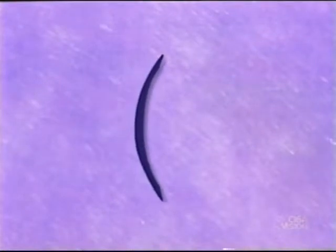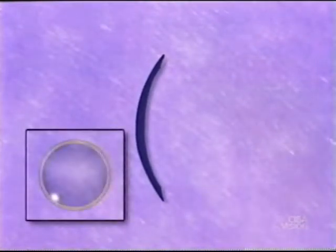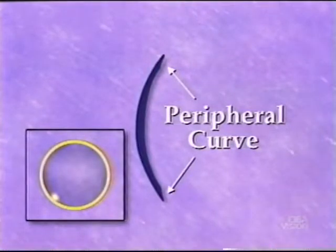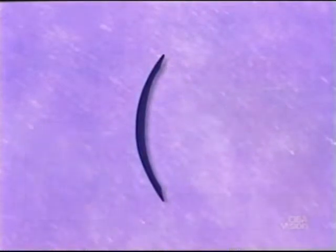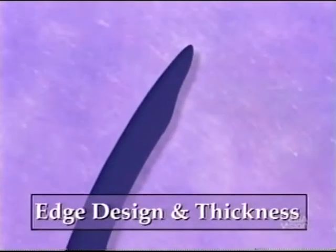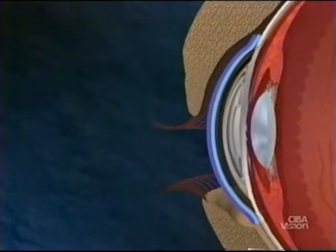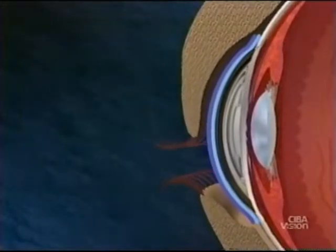Each additional curve surrounding the base curve on the posterior lens surface is called a peripheral curve. Edge design and thickness are important for good lens comfort. This ensures that when the eye blinks, the eyelid glides smoothly over the lens edge.